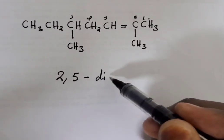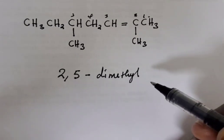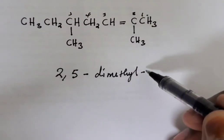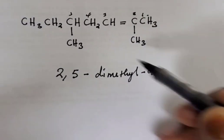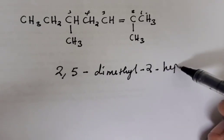Then where is the double bond? The double bond is on carbon number two. Then the longest chain is a heptene.